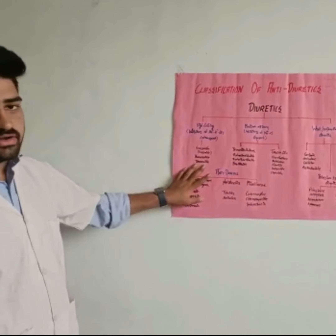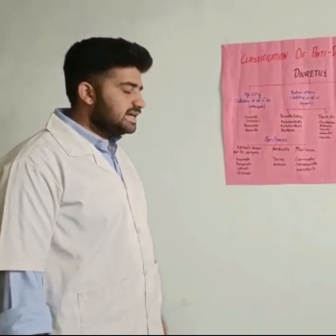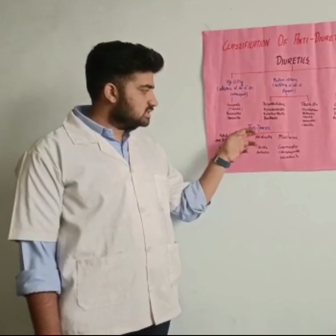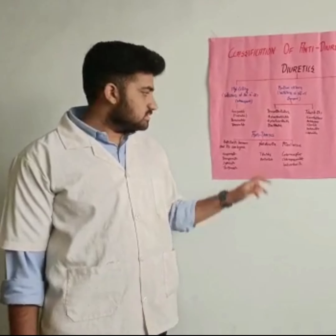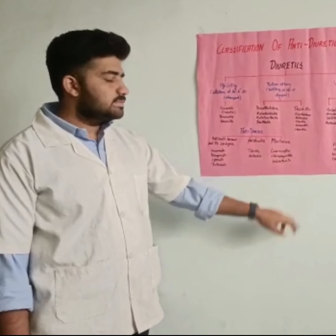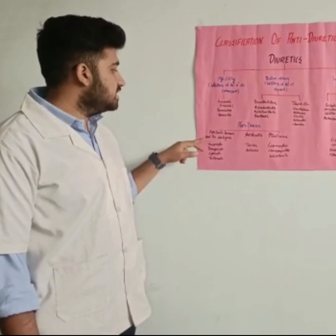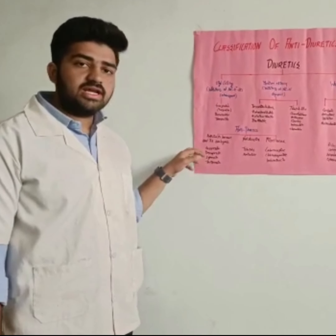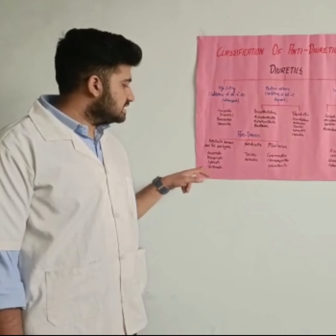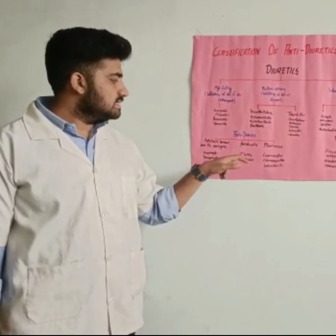Now, antidiuretics. Antidiuretics are classified into antidiuretic hormone and its analogs, natriuretics, and miscellaneous. Antidiuretic hormone and its analogs are vasopressin, desmopressin, and lypressin.